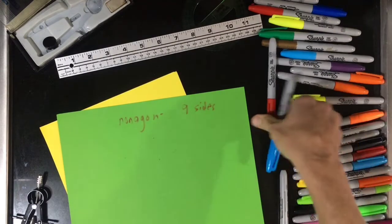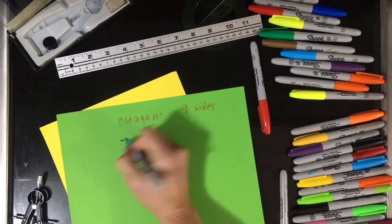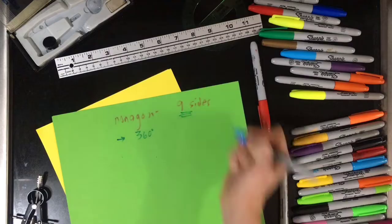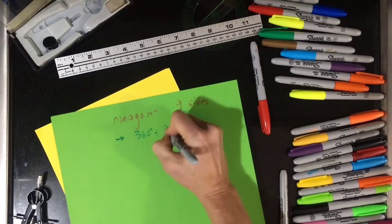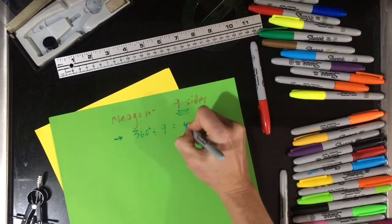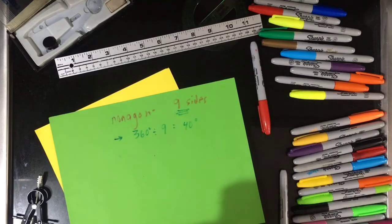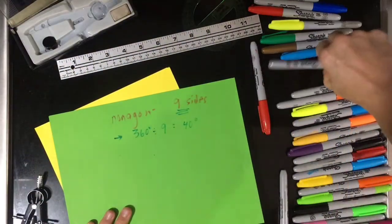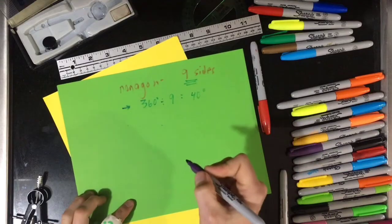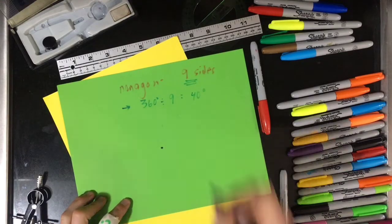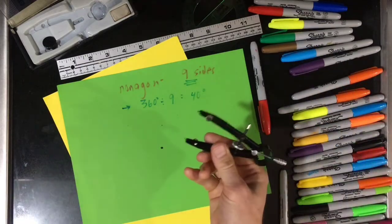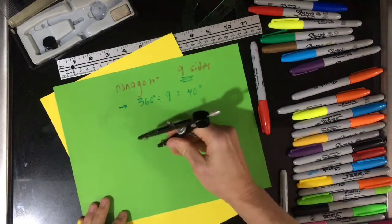Calculating the center angle, that would be 360 degrees divided by nine. That gives me 40, 40 degrees. So first of all, we're going to draw the center point for a circle. And I'm going to do this in a different order, so first I'm going to be making the circle around this point.